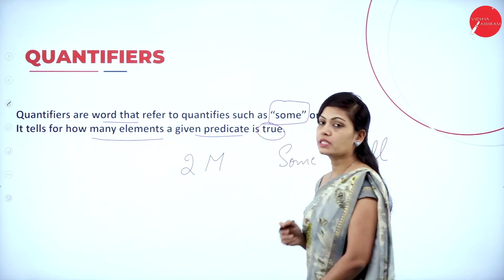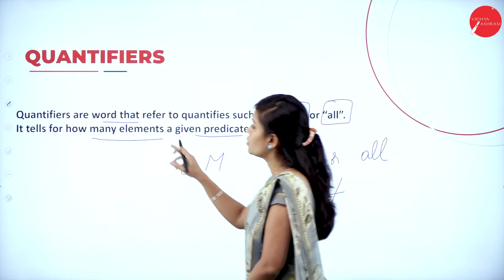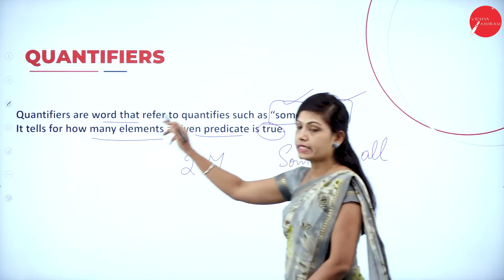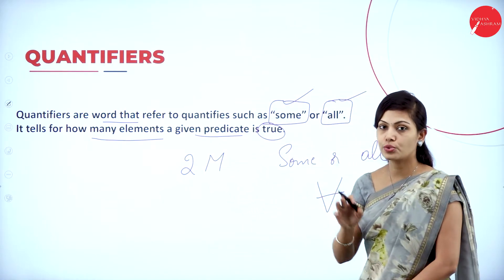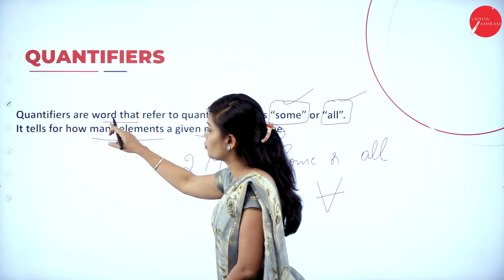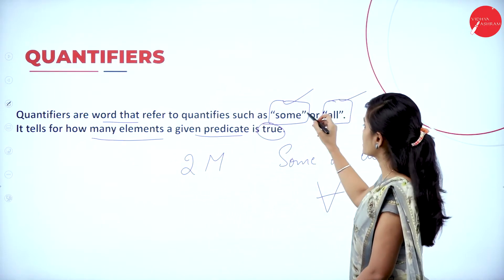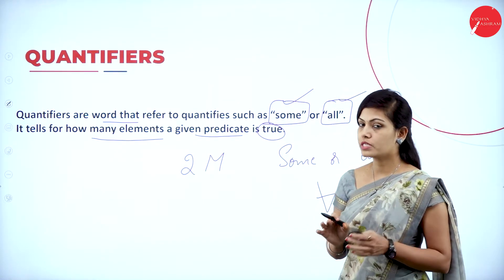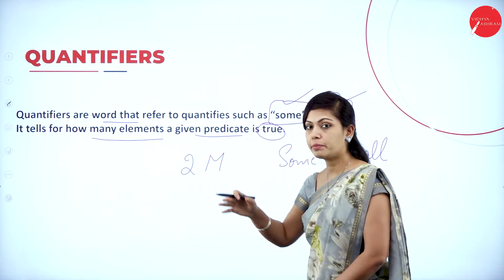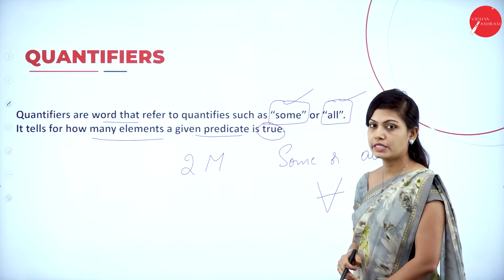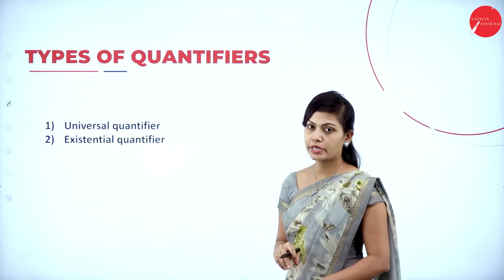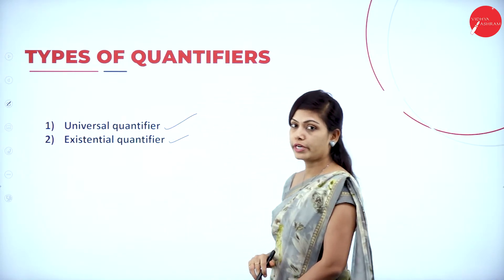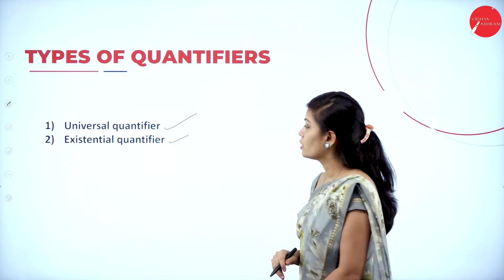Quantifiers are words that refer to quantities such as 'some' or 'all'. It tells for how many elements a given predicate is true. In quantifiers, all the statements are true. In quantifiers, we have two types: universal quantifier and existential quantifier.